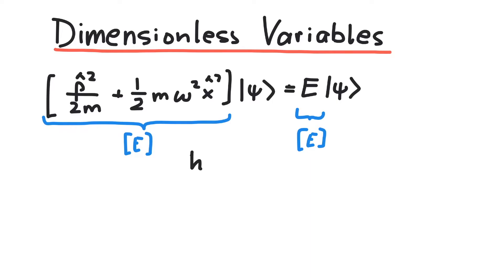First let's pull out a factor of h-bar times omega out of the brackets here. H-bar is in joules times seconds, and omega is 1 over seconds, so this has units of energy.